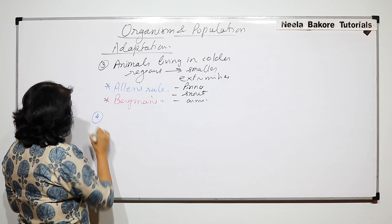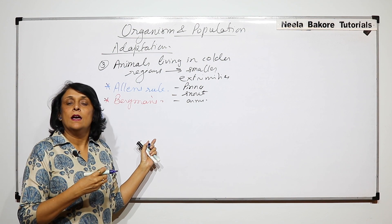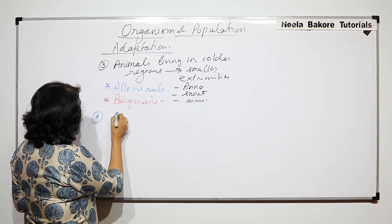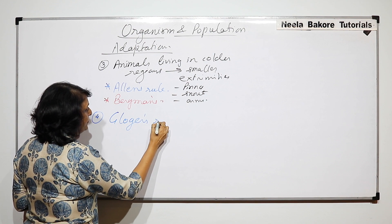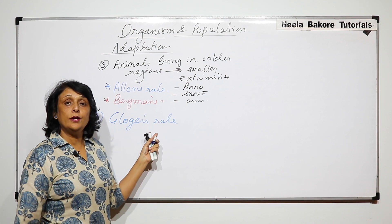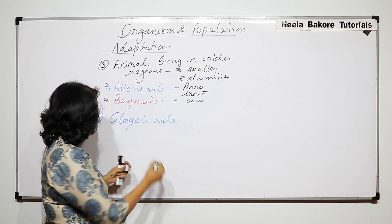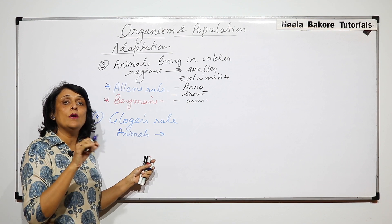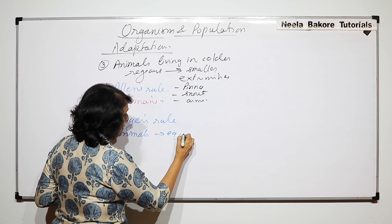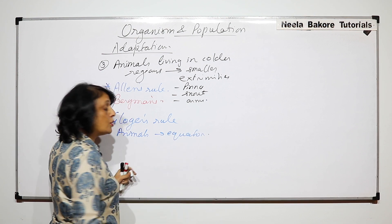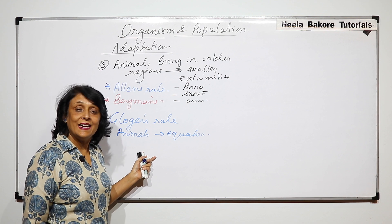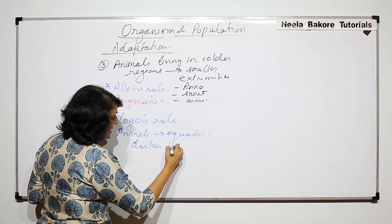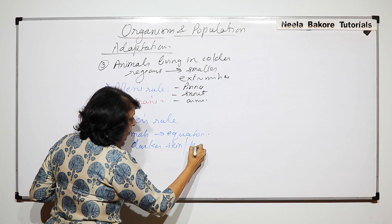Another adaptation, again named after the scientist who described it, is called Glogger's rule. According to this, the animals living around the equator, where the solar intensity is comparatively higher, have darker skin or fur color.